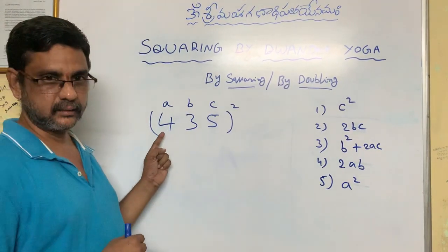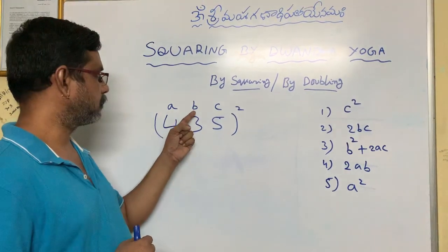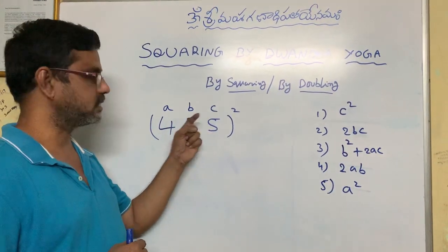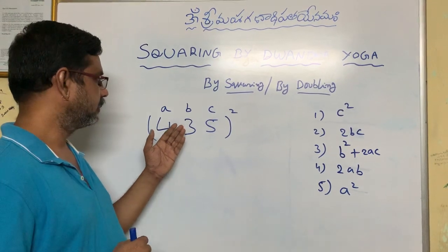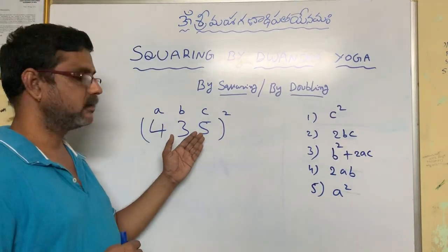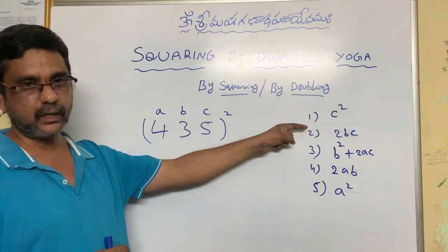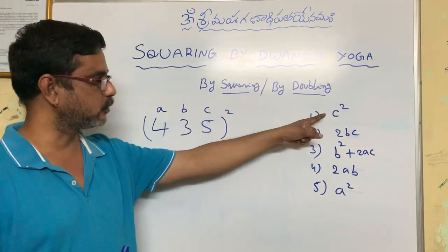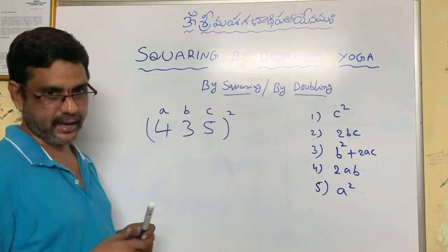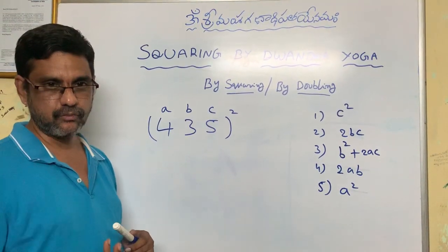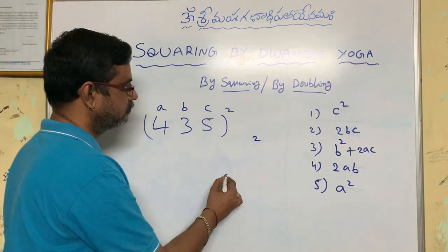Let us consider the 3 digits as A, B, C. The hundreds digit is A, the tens digit is B, and the units digit is C. So for 435, A=4, B=3, C=5. According to Step 1, first we compute C square. Here C is 5, so 5 square is 25. Write 5 here and carry over 2.